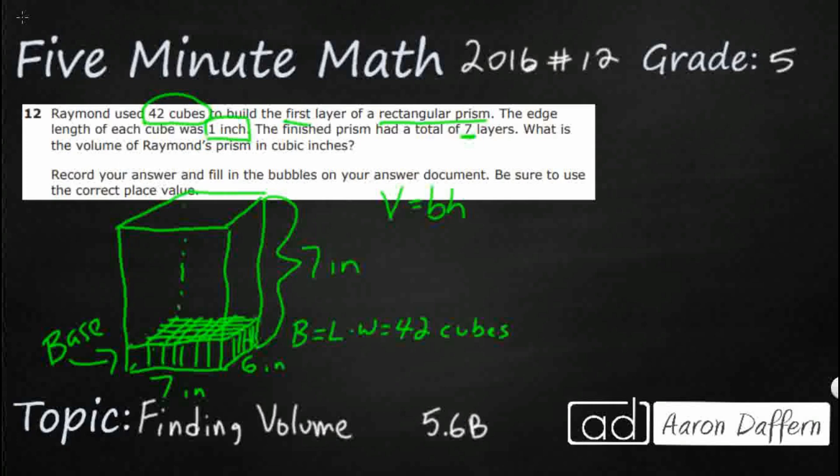And they basically gave us both of the numbers right in the problem itself. So we know that our base here is 42 cubes. So base is 42. And then they say that there's total of seven layers. And so I'm just going to put the parentheses here to show multiplication. And so that's it. All that work.